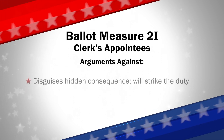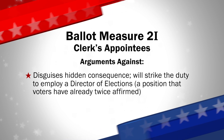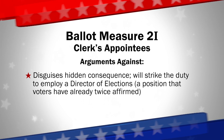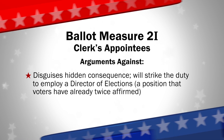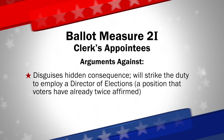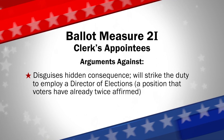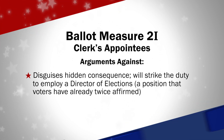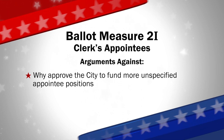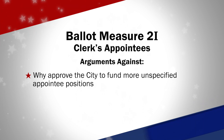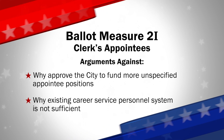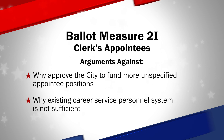Those opposed to 2I say it is a deceitfully omissive ballot question that disguises a hidden consequence. Though it is not clearly stated, a vote for the ballot question will strike from Denver City Charter the duty of the clerk and recorder to employ a director of elections — a position that voters have already twice affirmed is an essential role. The critical position of director of elections has been our safeguard that the voting chaos of 2006 would never happen again. Opponents question why voters are being asked during an economic and unemployment crisis to approve more unspecified appointee positions, and why the existing career service personnel system is not sufficient.